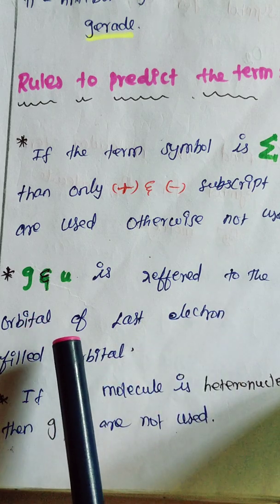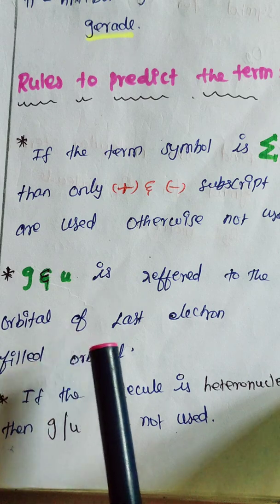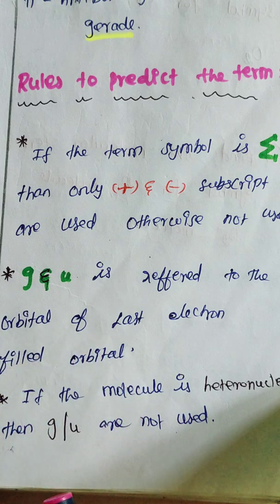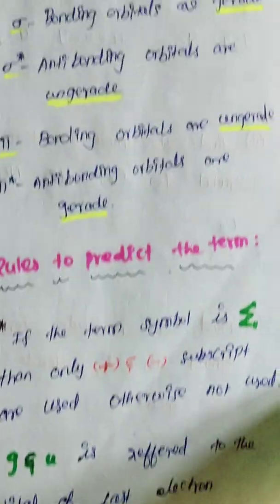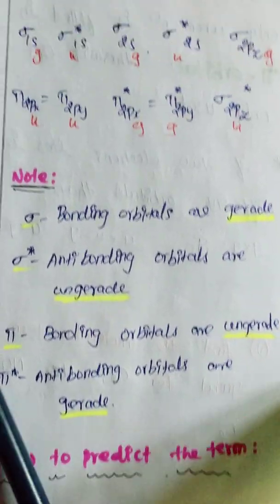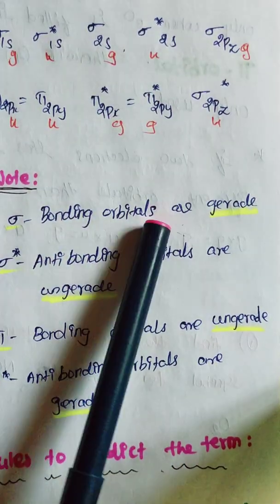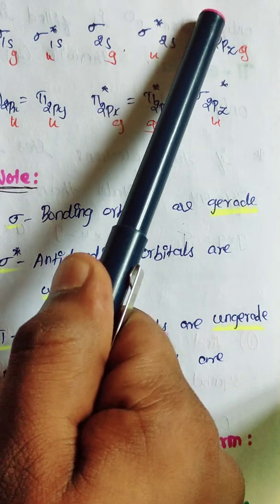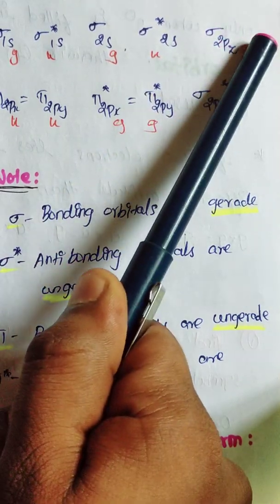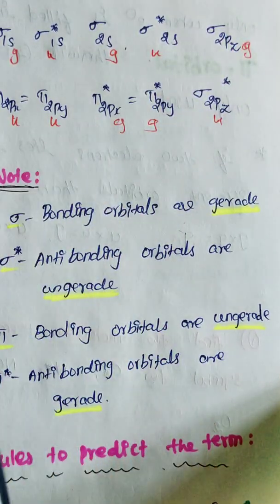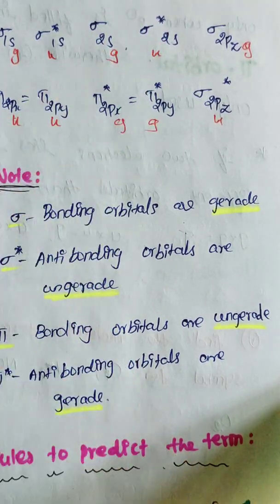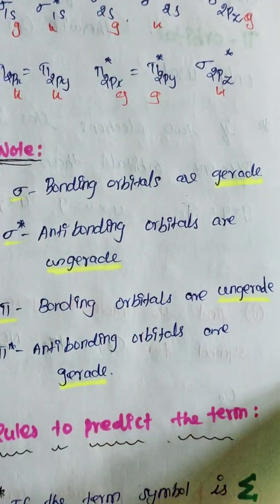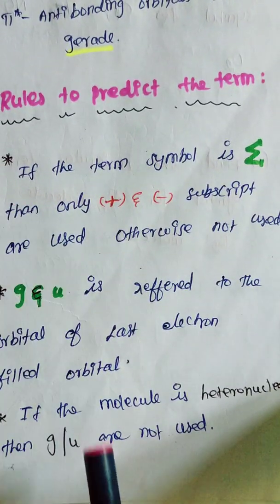For gerade and ungerade, we look at where the last electron is present and whether that orbital is gerade or ungerade — and that label is what we mention. For example, if the last electron fills a gerade orbital, we use gerade. If it fills an ungerade orbital, then it is ungerade.